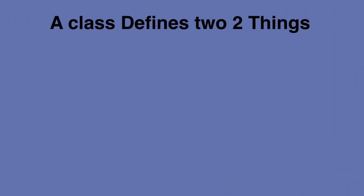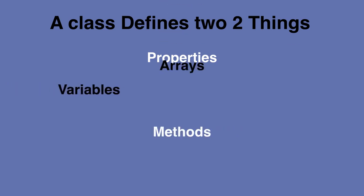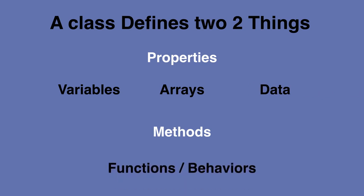Now, a class defines two things for this something. It defines the properties of this something, it defines the methods. The properties could be variables, arrays, or any type of data. For the methods, we have functions that create behaviors for this thing that the class is describing.